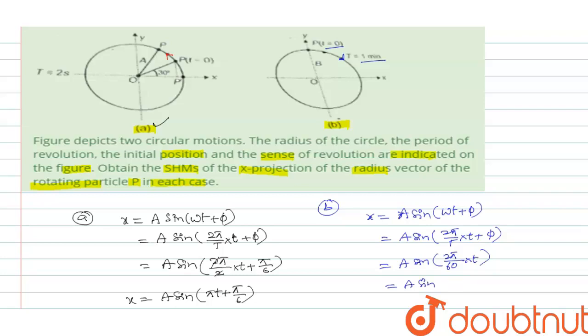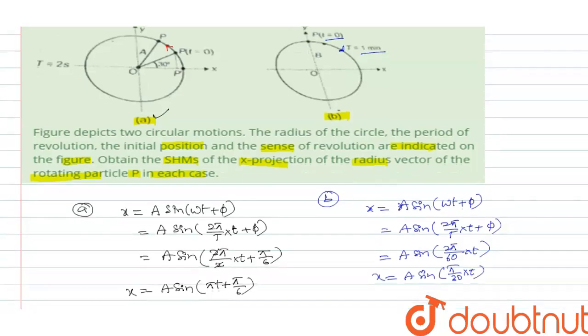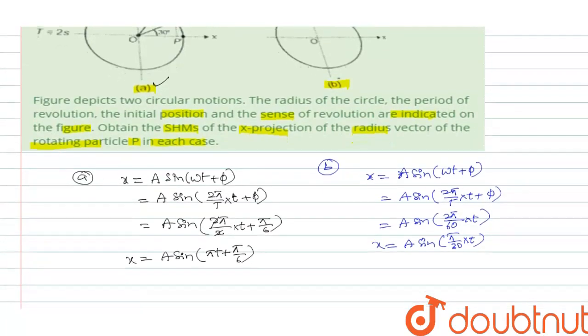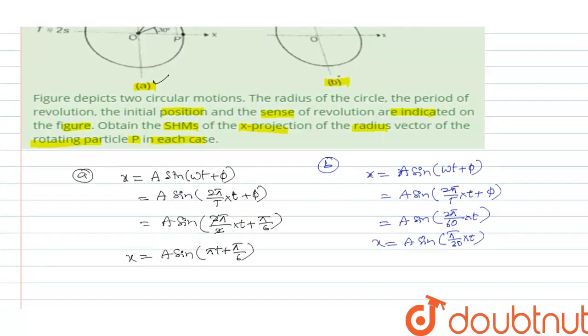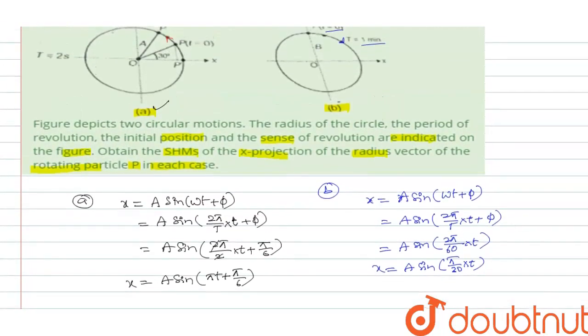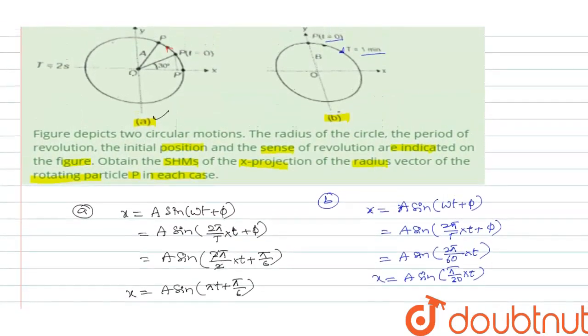A sine of 2 pi by time period equals 1 minute, so 1 minute you can write in seconds as 60 seconds into t. Okay, plus phi is 0 here. Next you will get a simple equation. So we have pi by 30 into t. This is what x equation. This is x.